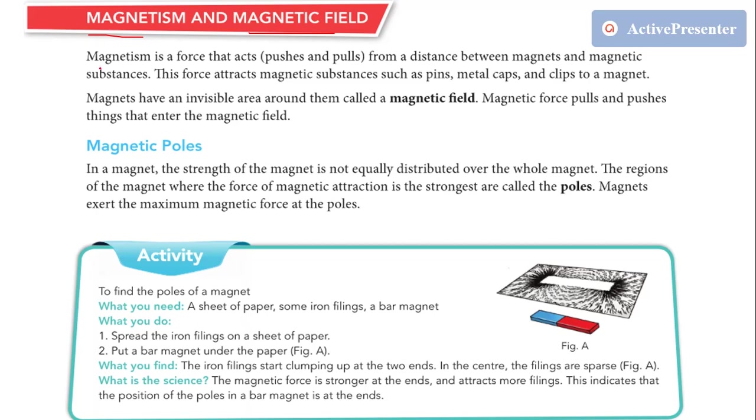Magnetism is a force acting between the magnet and magnetic substances. That force is called magnetism. It means either repulsive or attractive. So this force attracts the magnetic substances like pins, metal caps, and clips to the magnet or repels them.